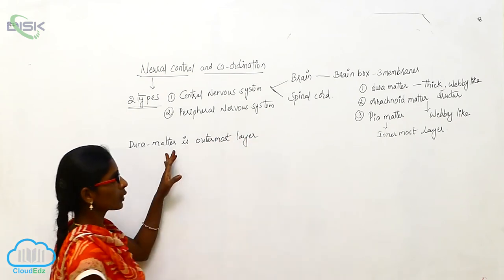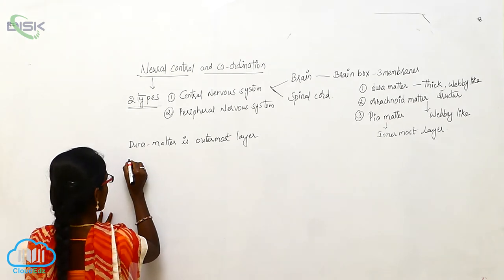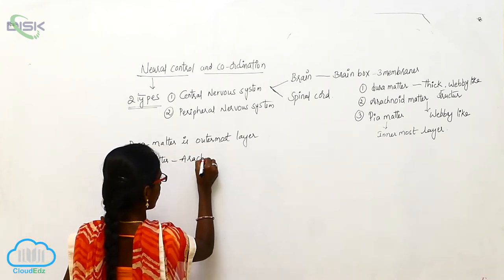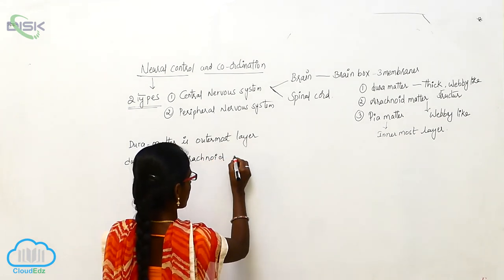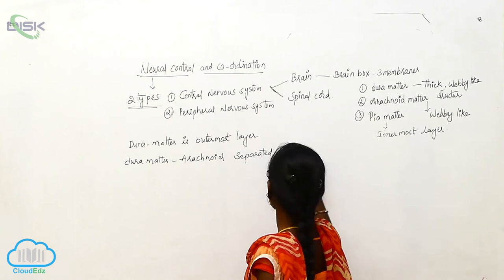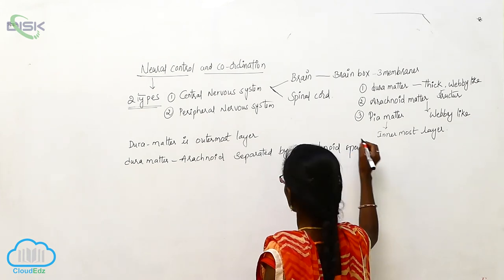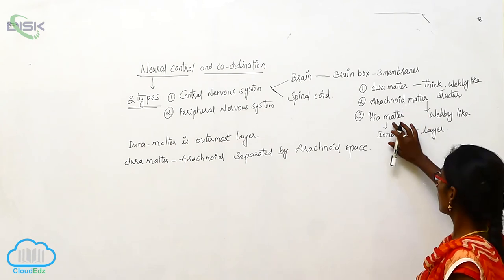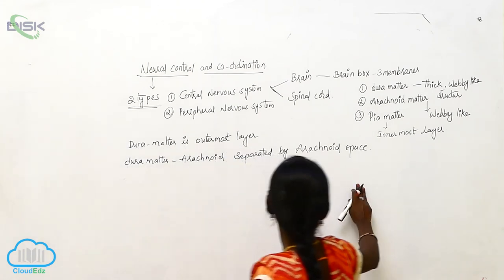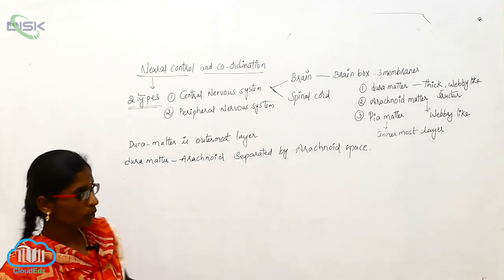The Dura Mater and Arachnoid Mater are separated by the subdural space. The Arachnoid Mater and Pia Mater are separated by the subarachnoid space.